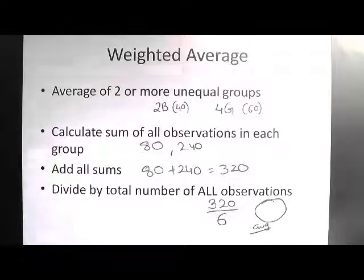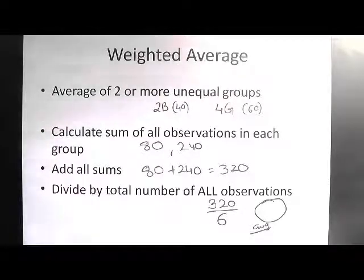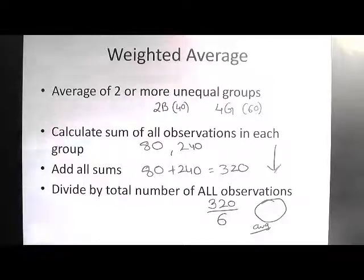If there were only one boy and one girl, we could simply say (40 + 60) ÷ 2 = 50. But because the number of boys is not equal to the number of girls, we have to go through this process to find what we call the weighted average.